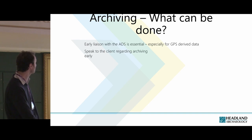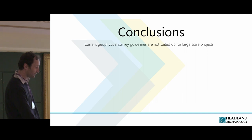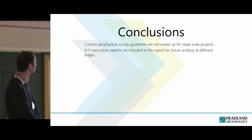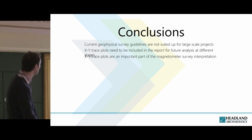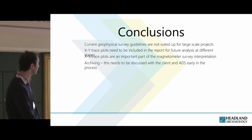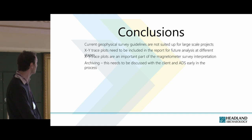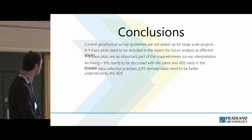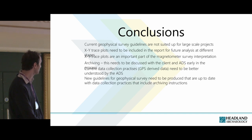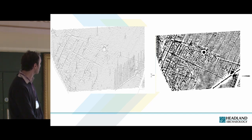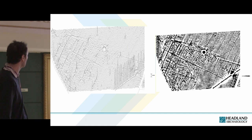What can be done? Early liaison with ADS is essential. Speak to the client early and make it part of your standard practice to have all files in an archival format from the start. We feel there ought to be a change in the guidelines, especially for large surveys — not the small-scale gridded surveys the current guidelines address. XY trace plots should be included in the report as standard. Archiving needs to be discussed very early with the ADS and your client, because it's been a major bugbear for geophysicists for probably the last 10 years and hasn't gone away. The ADS probably need more liaison with us about GPS-derived data. We attempt to include a trace box as standard on our reports.